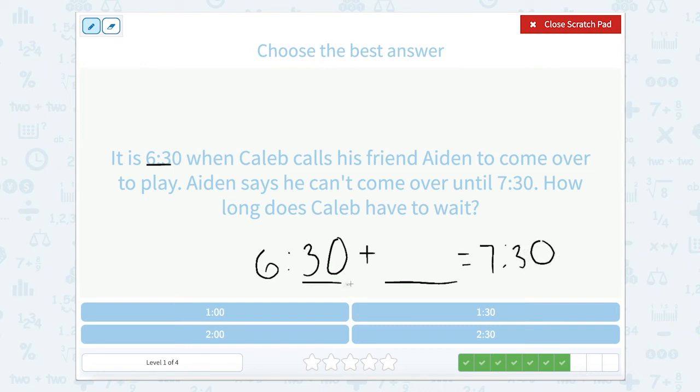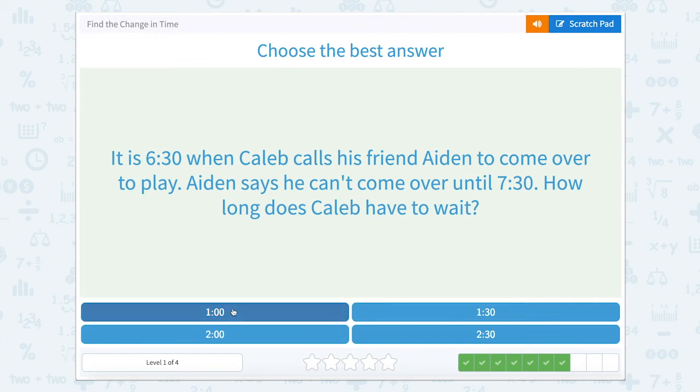So I'm looking here at our minutes and 6:30 and 7:30 both have 30 minutes. So instead of focusing on the minutes now, we can focus on the hours. How many hours are between six o'clock and seven o'clock? Well, just one hour and zero minutes. So Caleb doesn't have to wait too long. Just an hour for his friend Aiden to come over and play.